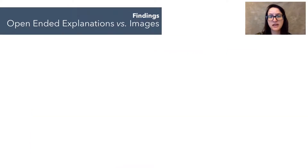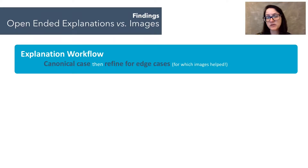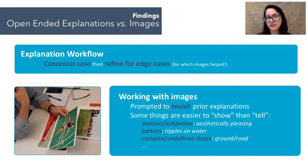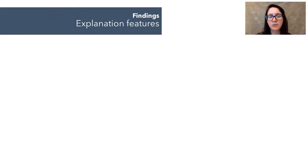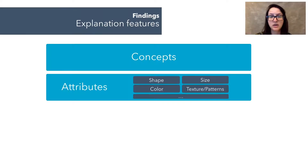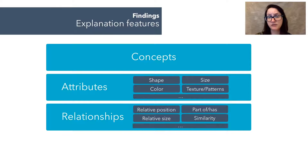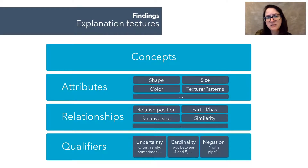We found that explanation workflows were pretty consistent across participants. They generally started their explanations covering the general case and then expanded to cover edge cases. Working with images was really helpful to recall these edge cases and contextualize descriptions, particularly for concepts that are hard to explain, such as aesthetically pleasing or the notion of ground. We also identified a few building blocks for explanations, including concepts — anything in an image that can be outlined — attributes which are properties of the things you outline like shape, color, size, relationships on the interplay of two or more concepts, and something we call qualifiers, which modulate the meaning of other building blocks in different ways, such as an indicator of uncertainty or frequency, cardinality, constraints, and so on.